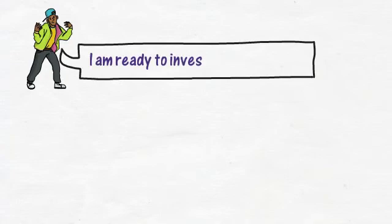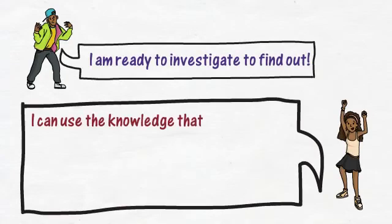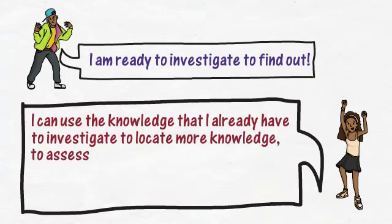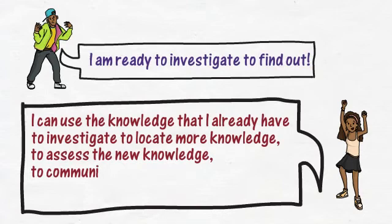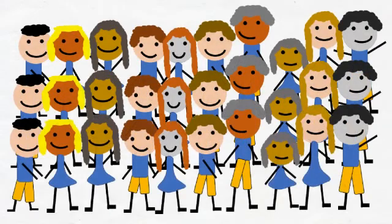When a child asks a mathematical question, they are ready to investigate to find the answer. They use the knowledge they already have to investigate, to locate more knowledge, to assess the new knowledge, to communicate their knowledge and to create more knowledge. When a child asks a mathematical question, they will not just be asking the teacher — they will be asking other students. There are 30 brains in the classroom; we can use all of them to learn.